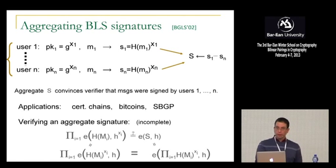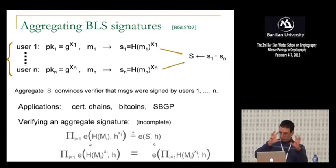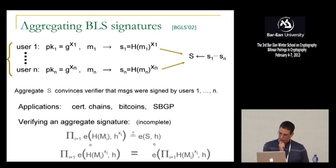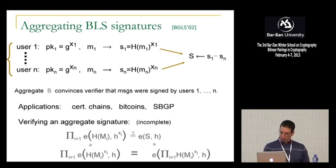So this kind of shows you the power of a very simple example of how these pairings are used and why they're so powerful at building cryptosystems — just because we can play these games with exponents and get things to verify, and we use these properties also in proofs of security. So that's a very simple example. We're not going to come back to this, but it's a good example of how pairings work and how they're used.